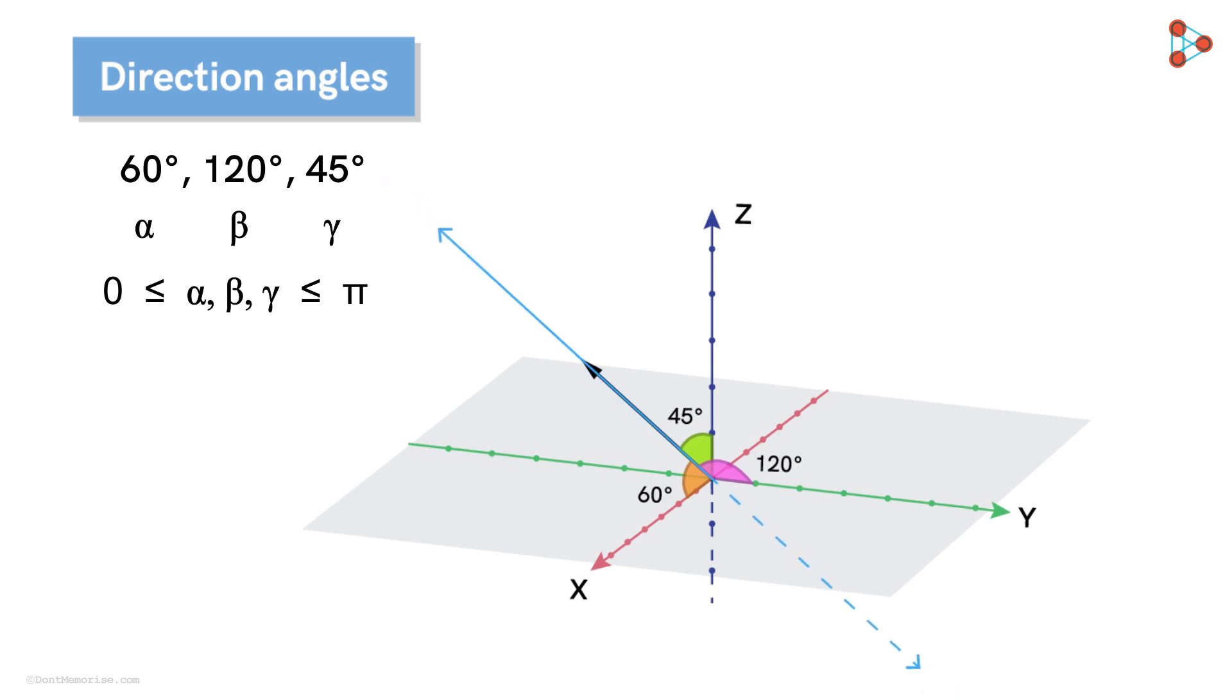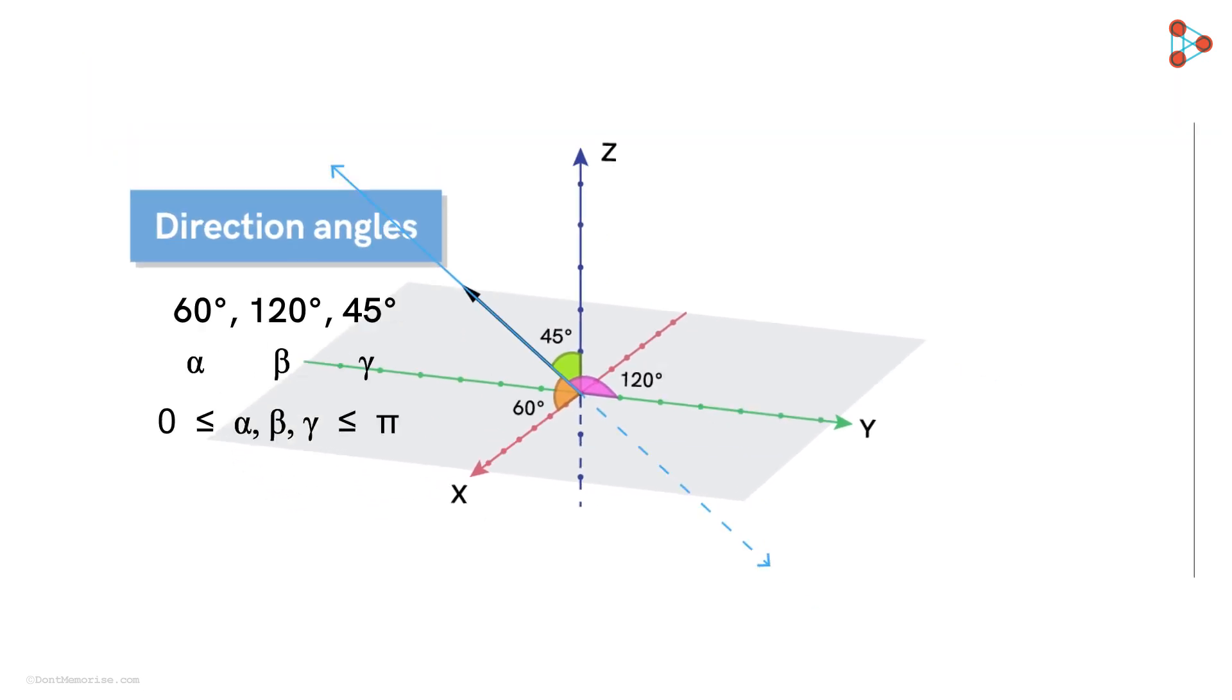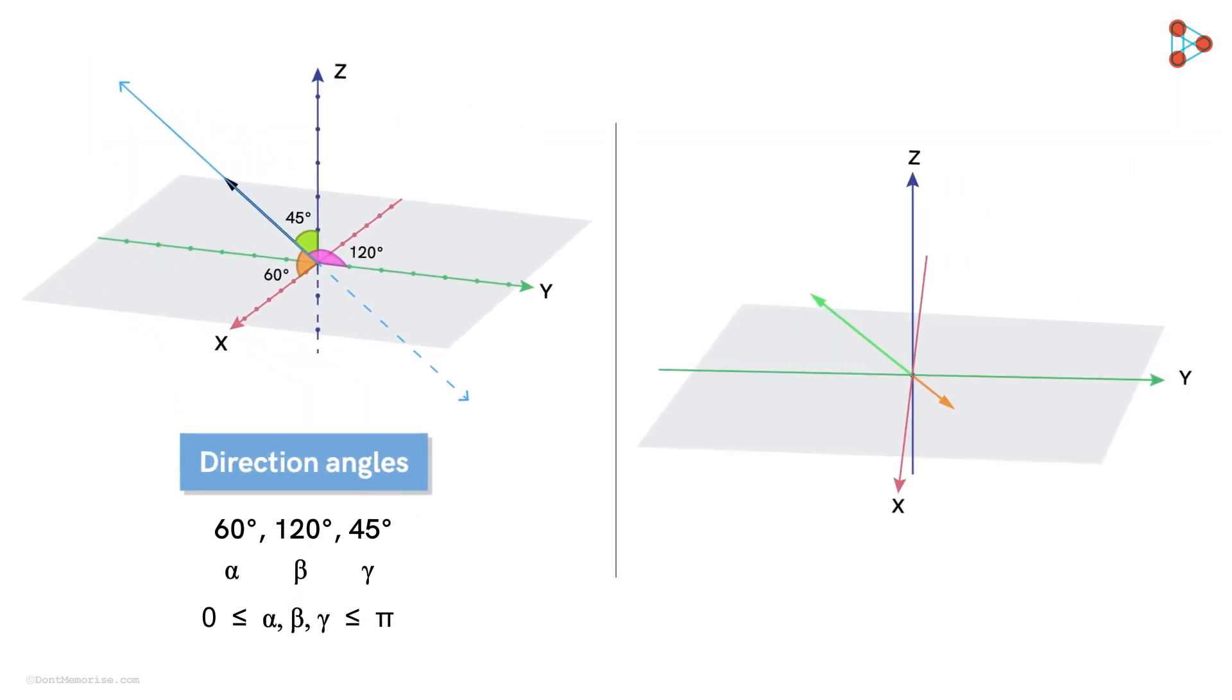A line extends in two opposite directions, so it will have two sets of direction angles. One set will be the same as this vector along the line pointing that way, and the other set will be the direction angles of any other vector pointing in the opposite direction. But what is this other set of direction angles?